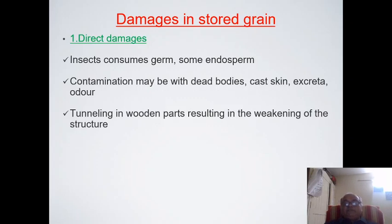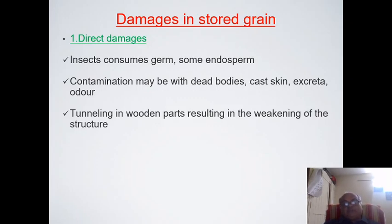Damage can be classified into two types. First is direct damage: insects consume the germ and endosperm for their metabolic activities, and contamination may be from dead bodies, cast skins, excreta, and odors. Then there is tunneling in wooden parts — this is again a problem because the storage structure is weakened by tunneling of these insects.